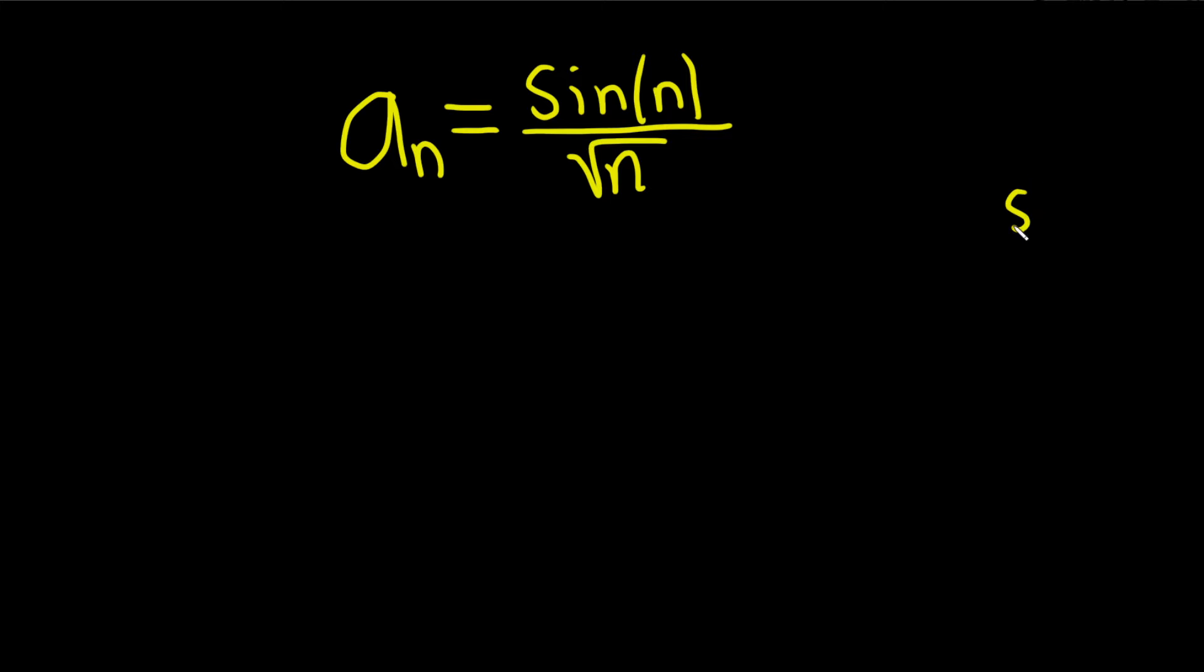The sine function is bounded between -1 and 1, and the denominator is growing. So this is bouncing back and forth between multiple numbers—the smallest it can be is -1, the biggest is 1—it's trapped. The denominator is getting bigger and bigger, so this should approach zero.